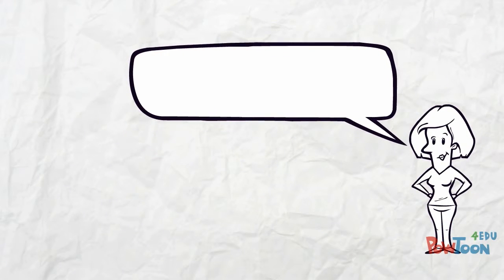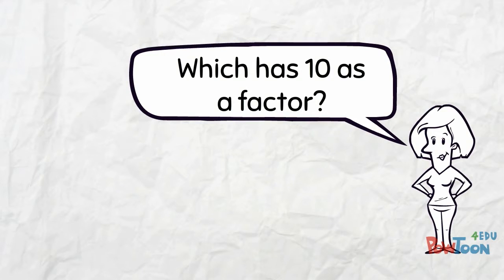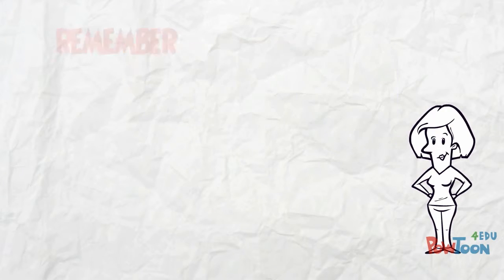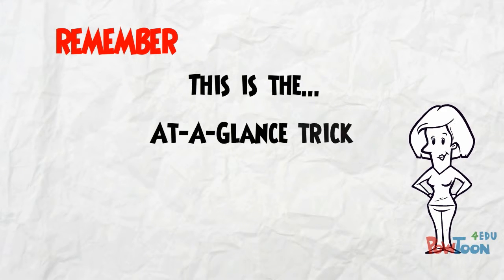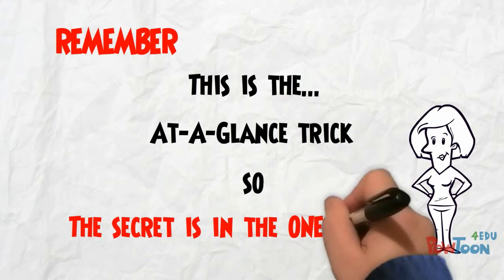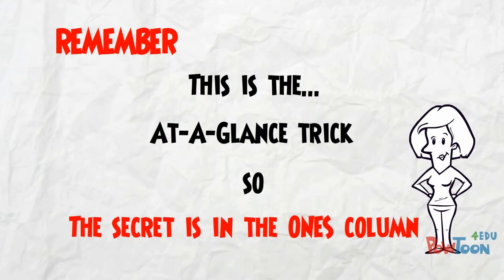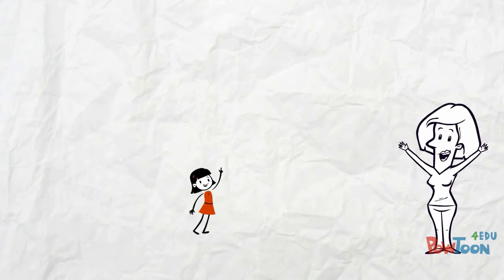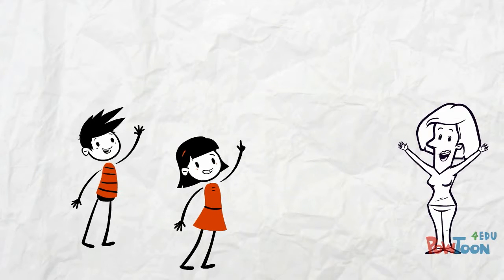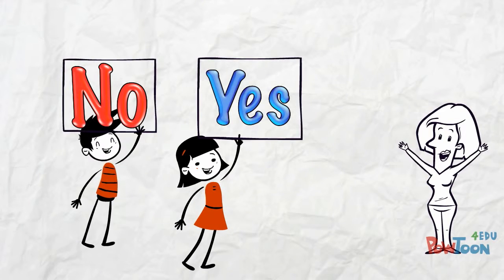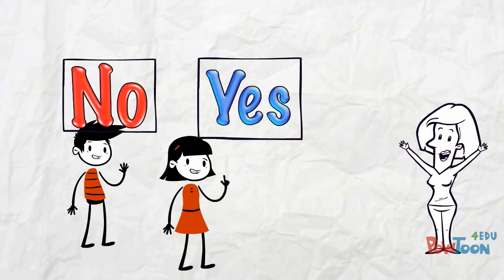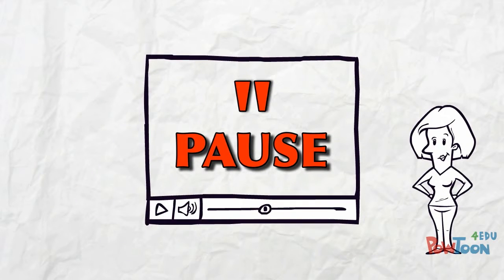Let's see if you can tell with these numbers which has 10 as a factor. Remember, this is the at-a-glance trick you're doing here — the secret is all in the 1s column. Hold up your YES or NO answer as soon as you are sure. Your teacher will pause the film to give you enough time to answer.